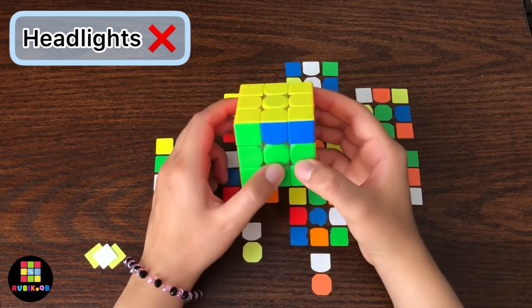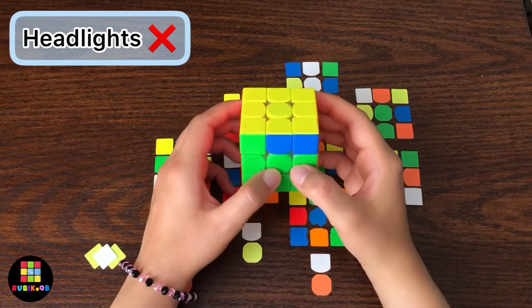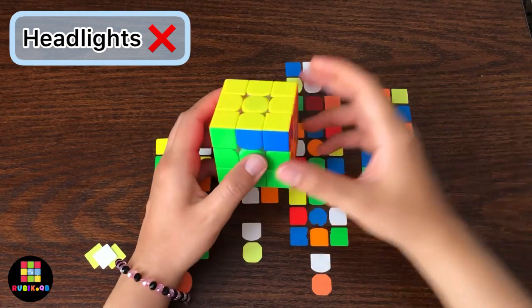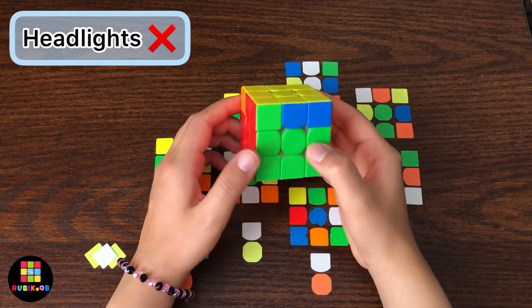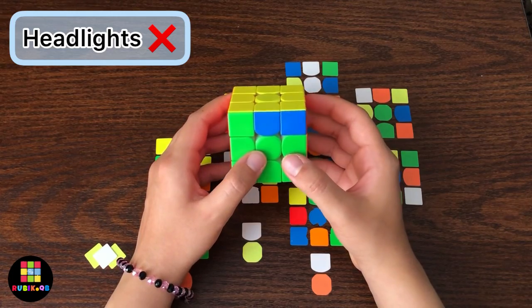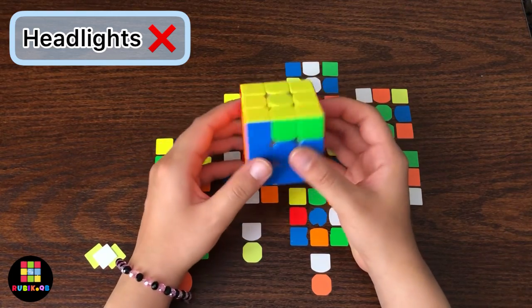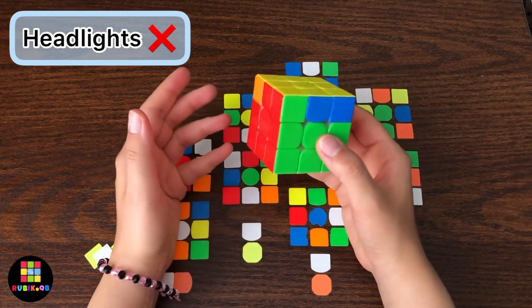As I told you before, in this case there are no headlights at all and this is called diagonal corner swap, which means two diagonal corners need to be swapped. So for solving this one you can hold your cube whatever you like and you can execute the algorithm from any angles.